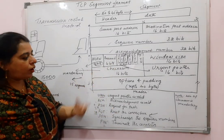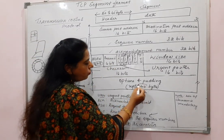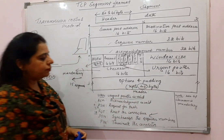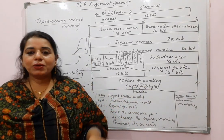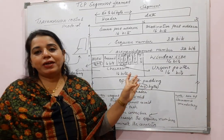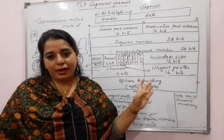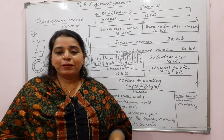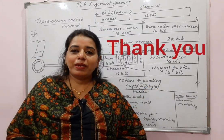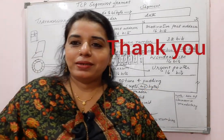The remaining fields are options and padding, up to 40 bytes. This is all about the different fields present in the TCP header. I hope the explanation is clear to you all. Bye-bye, take care.